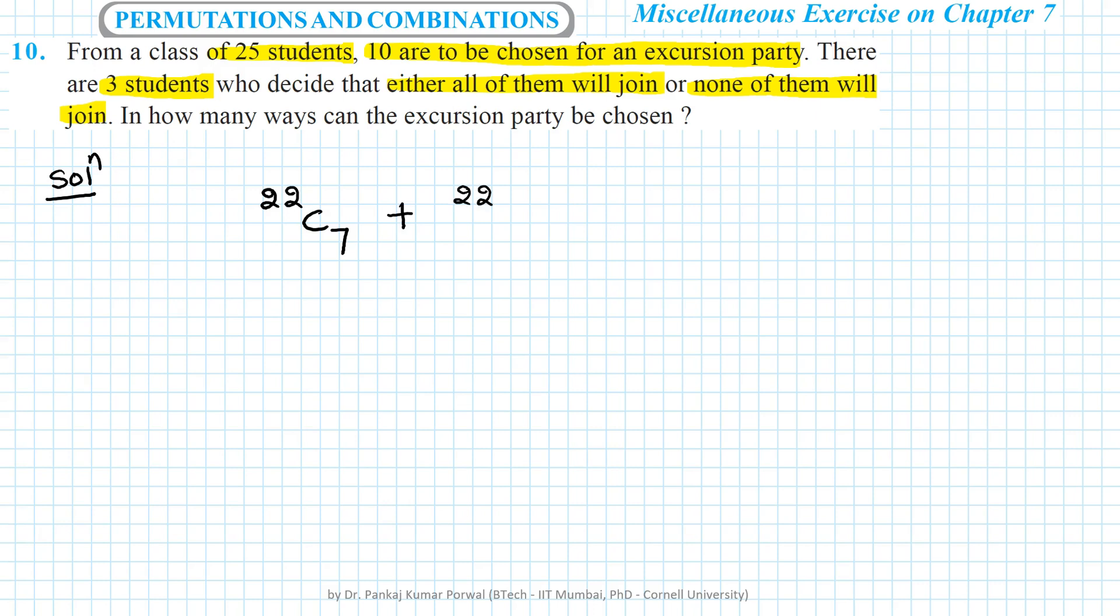So that number of ways will be 22C10. This will be the total number of ways to choose the excursion party.